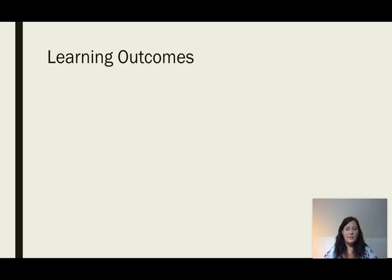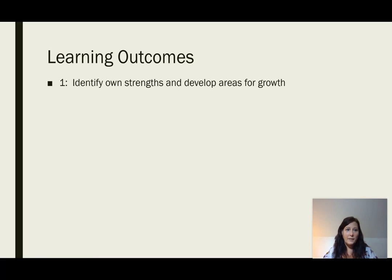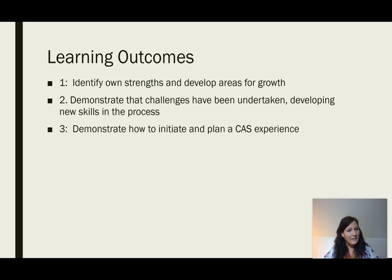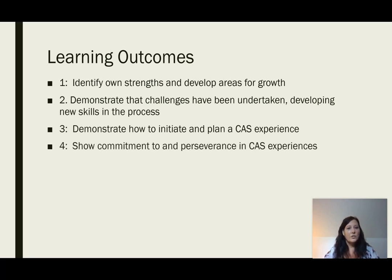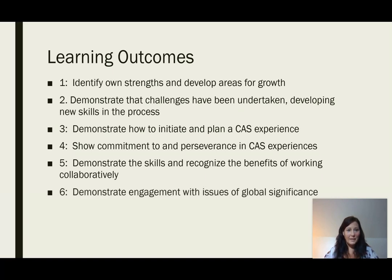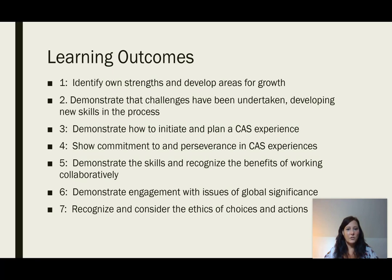In order to demonstrate that students have met the requirements for the IB Diploma Program, they must meet seven learning outcomes: identify their own strengths and develop areas for growth; demonstrate that challenges have been undertaken, developing new skills in the process; demonstrate how to initiate and plan a CAS experience; show commitment to and perseverance in CAS experiences; demonstrate the skills and recognize the benefits of working collaboratively; and demonstrate engagement with issues of global significance and recognize and consider the ethics and choices of others.